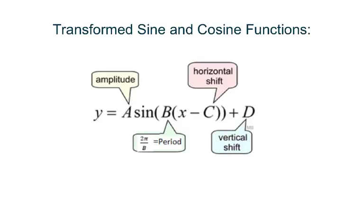Today's lesson is about transformed sine and cosine functions. Take a sine function for example. We call A the amplitude. B is used to figure out the period: 2π over B, or if it's in degrees, 360 degrees over B. We call C the horizontal shift, and D is called the vertical shift.